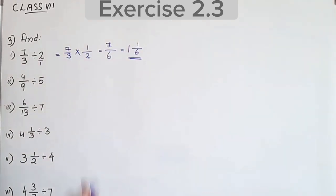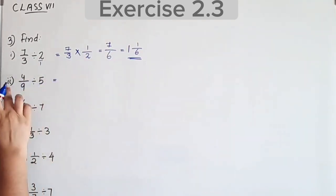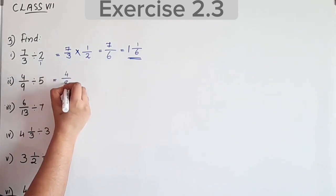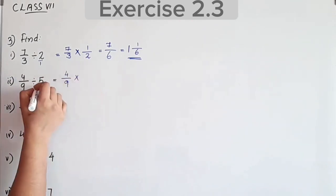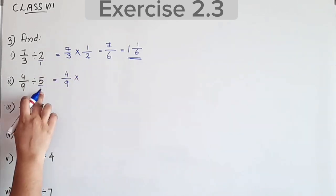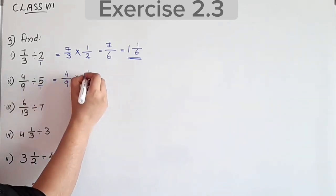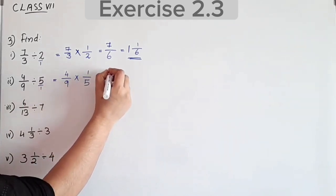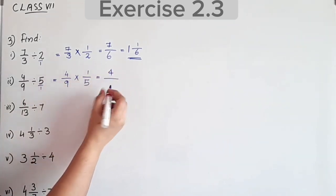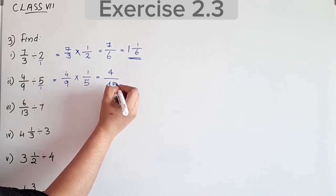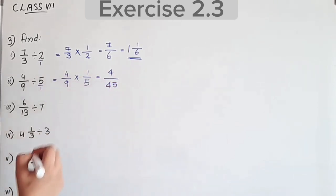Next question: 4/9 divided by 5. Write 5 as 5/1, reciprocal is 1/5. Equal to 1 into 4 is 4, 9 into 5 is 45. Answer: 4/45, which is a proper fraction.